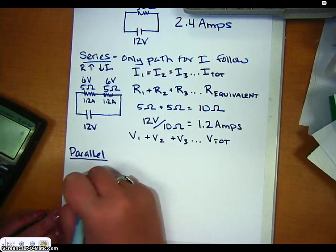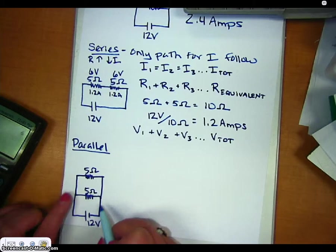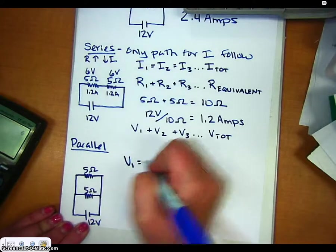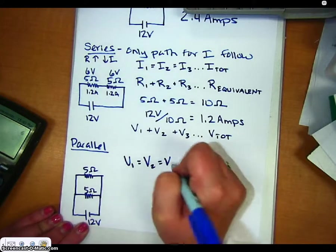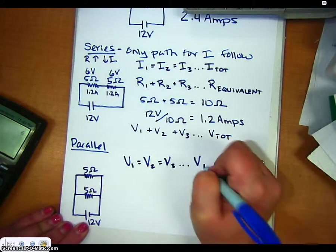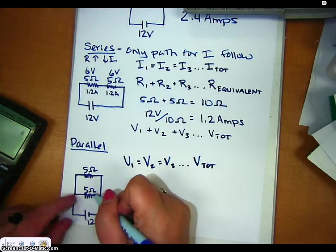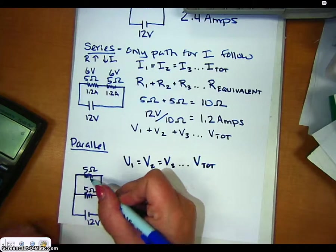So let's do this. So at every single position when something is in parallel, the volts is going to be equal to the total voltage. So this guy gets 12 volts, this guy gets 12 volts.